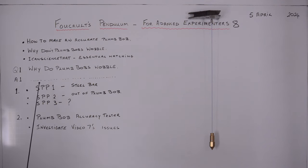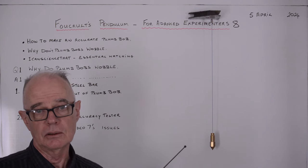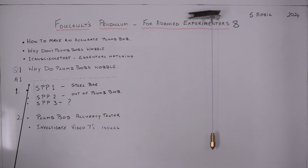So where are we up to? I have a question. Why do plumb bobs wobble? Now unfortunately in practice they do wobble. And why do they wobble? Well the short answer is, because they're not accurate.